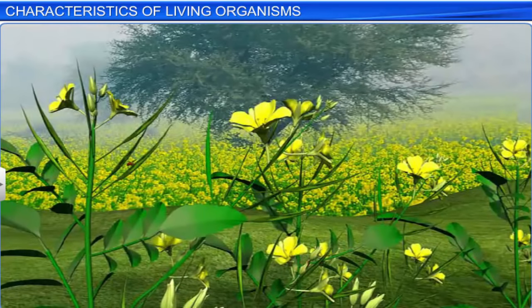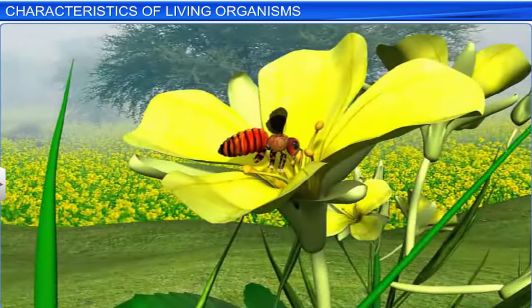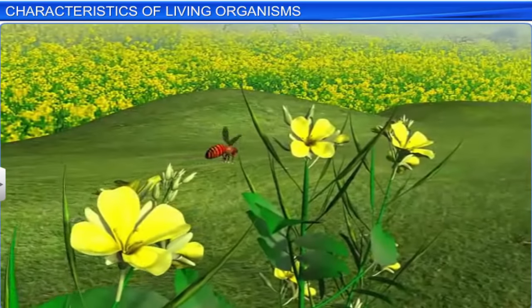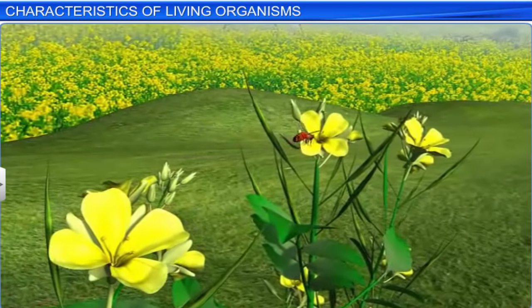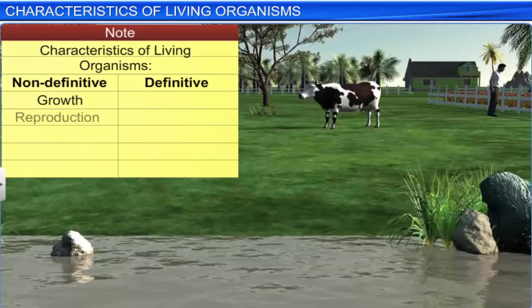However, certain organisms, such as sterile worker bees, are not capable of reproducing. But that doesn't mean they are non-living. Reproduction is, therefore, not a definitive characteristic of the living.